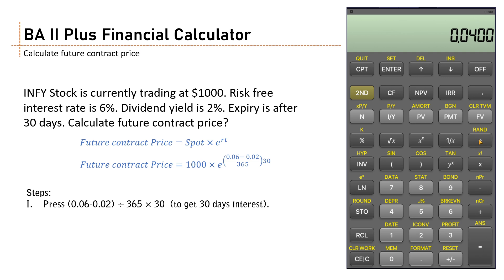Now you divide this thing with 365 so that you get one day interest. Now you multiply it with 30, you get 30 days interest. Now you convert this thing into the continuous interest rate.